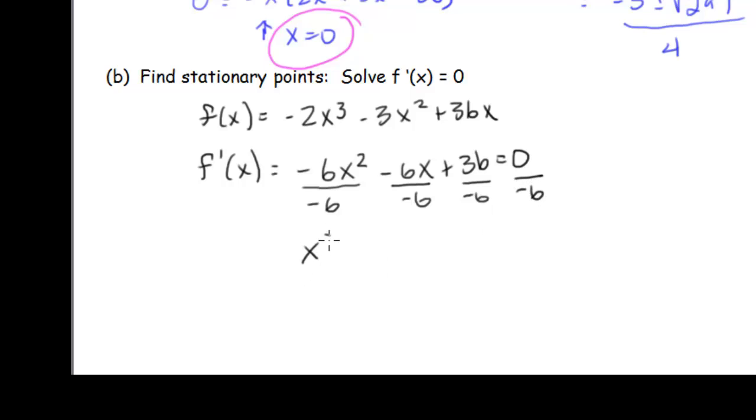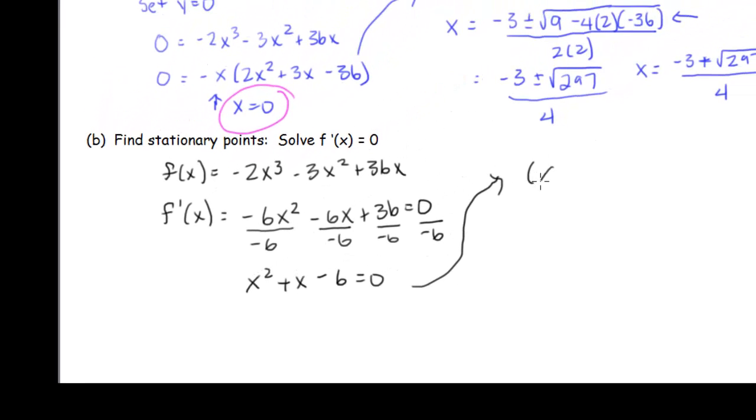And I get x squared plus x minus 6 equal to 0. And I happen to know that that factors. So let's say I'm going to have x and x. I'm going to have 1 plus, 1 minus. That's going to be plus 3 minus 2. So I have x equals negative 3, x equals positive 2. We'll worry about the y values later.